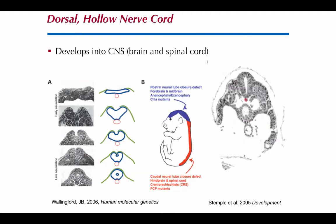The dorsal hollow nerve cord develops into the central nervous system, which in the end is the brain and spinal cord — the brain more anteriorly and the spinal cord running down the dorsal side. You can see the dorsal hollow nerve cord forming in the folding of the dorsal tissue — here it starts as a flat plate, and you can see it bends up and rolls into a tube, creating the hollow part inside. When this doesn't close all the way we have problems: if the anterior part doesn't close you have anencephaly; if the posterior part doesn't close you have conditions like spina bifida. After the tube forms it undergoes more development into more sophisticated brain and spinal cord features.